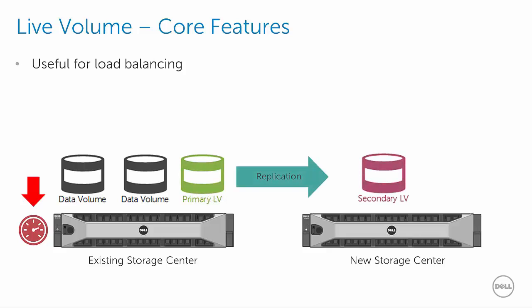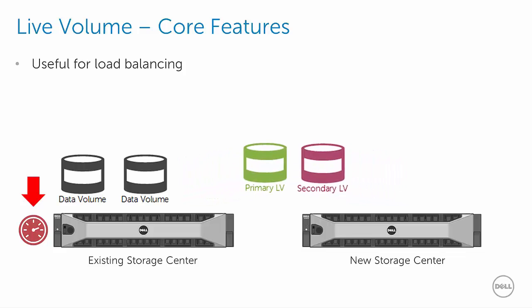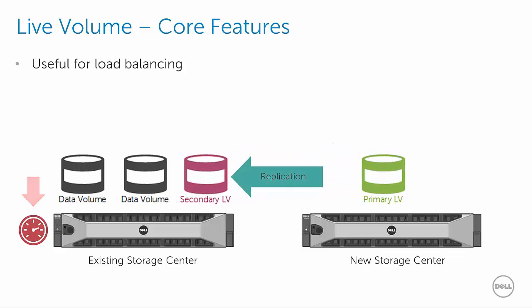Simply add a new storage center to the environment, identify a volume to be moved, convert it from a regular volume to a live volume, and allow the data to fully replicate to the target storage center. This can be done while the volume is live and serving I/O without impacting the workload. Then perform a manual role swap to promote the secondary live volume on the target storage center to primary status. If utilizing synchronous replication, the swapping can be done with no downtime while the workload is live.